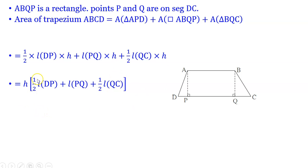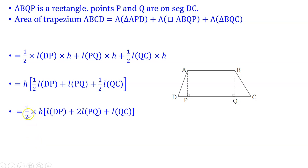Taking H as common, we get H times (1/2 × DP + PQ + 1/2 × QC). Now taking 1/2 as common from the bracket: 1/2 × H × (DP + 2 × PQ + QC). Note this step carefully — when we take 1/2 as common, DP and QC remain as they are, but PQ must be multiplied by 2 because it had no 1/2 factor. Therefore: 1/2 × H × (DP + 2·PQ + QC).